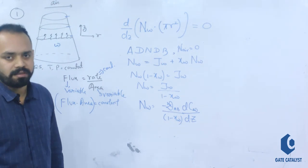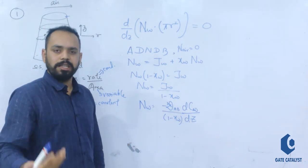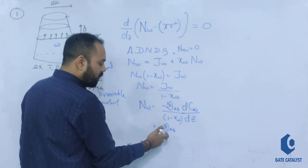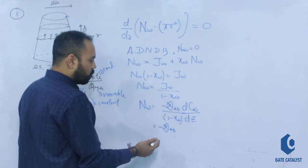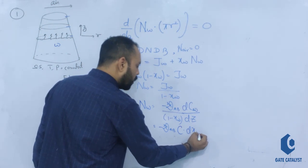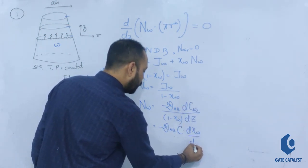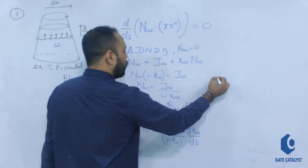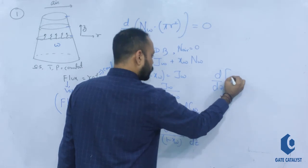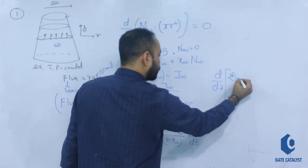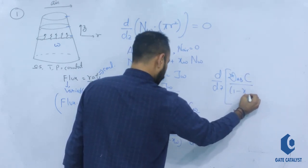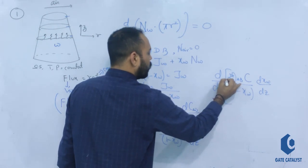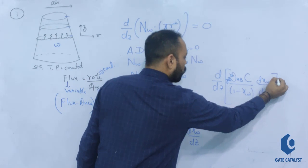C_W can be written as P_W/RT or as C_avg × x_W depending on the options. Writing N_W as −D × C_avg × (dx_W/dZ) / (1 − x_W), the final expression is: d/dZ of [D × C_avg / (1 − x_W) × dx_W/dZ × R²] = 0.